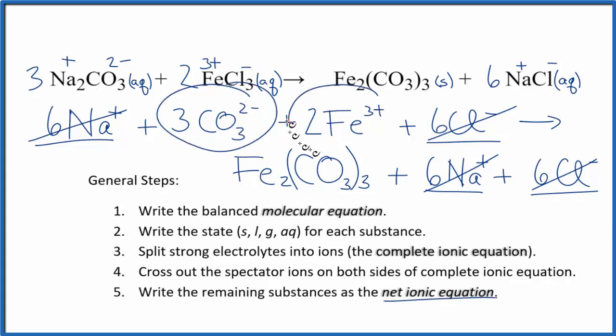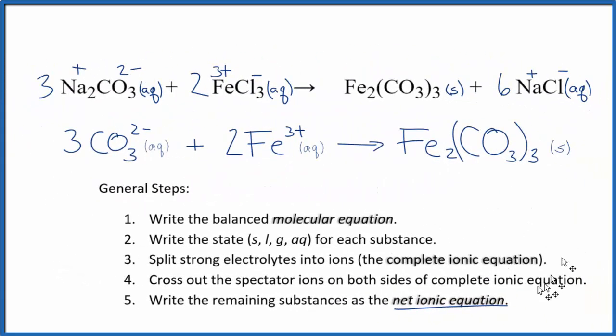3 carbonate ions, 2 iron 3 ions give us this iron 3 carbonate solid. I'll clean this up a bit and add the states in. And that will give us a very nicely formatted net ionic equation for Na2CO3 plus FeCl3. And this is the net ionic equation for sodium carbonate plus iron 3 chloride. This is Dr. B, and thanks for watching.